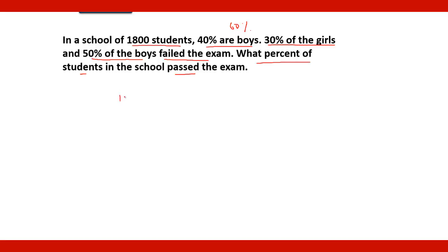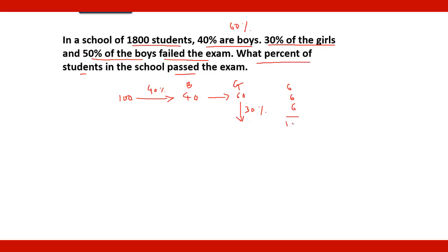As usual, assume there are 100 students in the school. 40 percent are boys, so 40 are boys and 60 are girls out of 100. 30 percent of the girls failed — that is 18 girls failed in the exam out of 100.